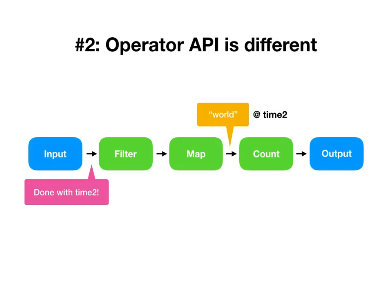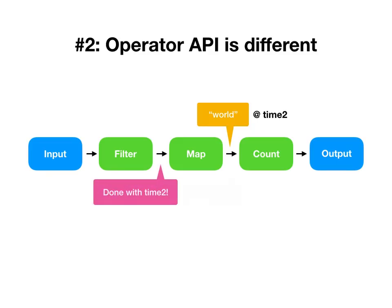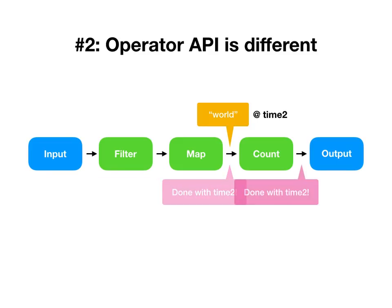A fairly standard way to do this in traditional dataflow systems is to have operators announce that they are done with certain times. The input operator might say 'I'm done with time two — I've sent my data at time two and I don't plan on sending any more.' This information needs to get shuffled around between workers, and once it is, each of these operators can in sequence reach the same conclusion.